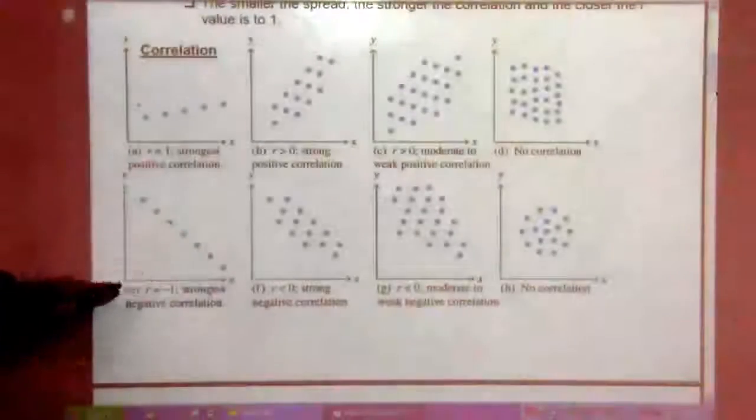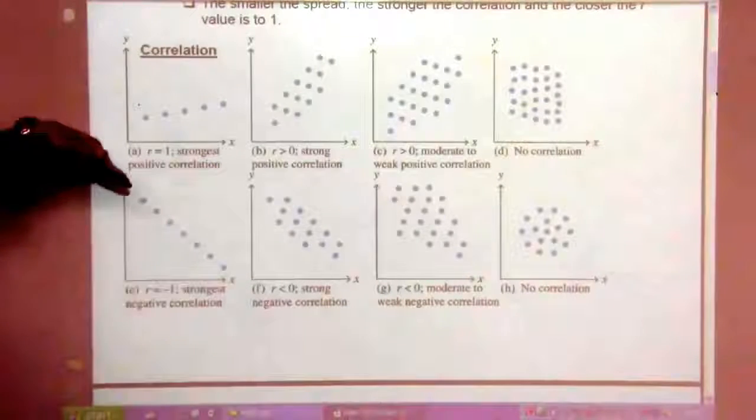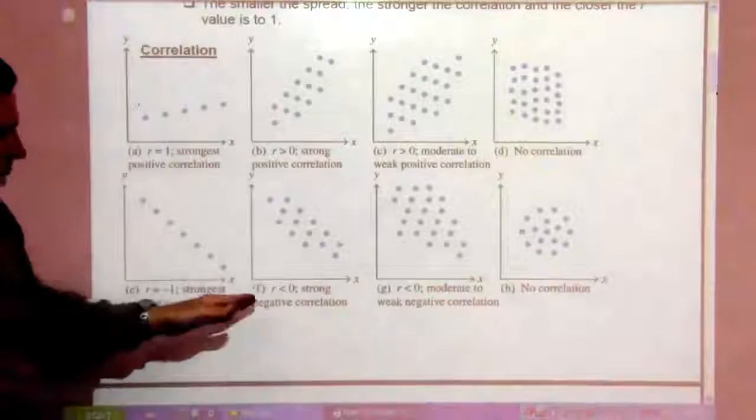Here, R is negative one. So as X gets bigger, Y gets smaller. That's a very strong correlation. Makes a nice line here.